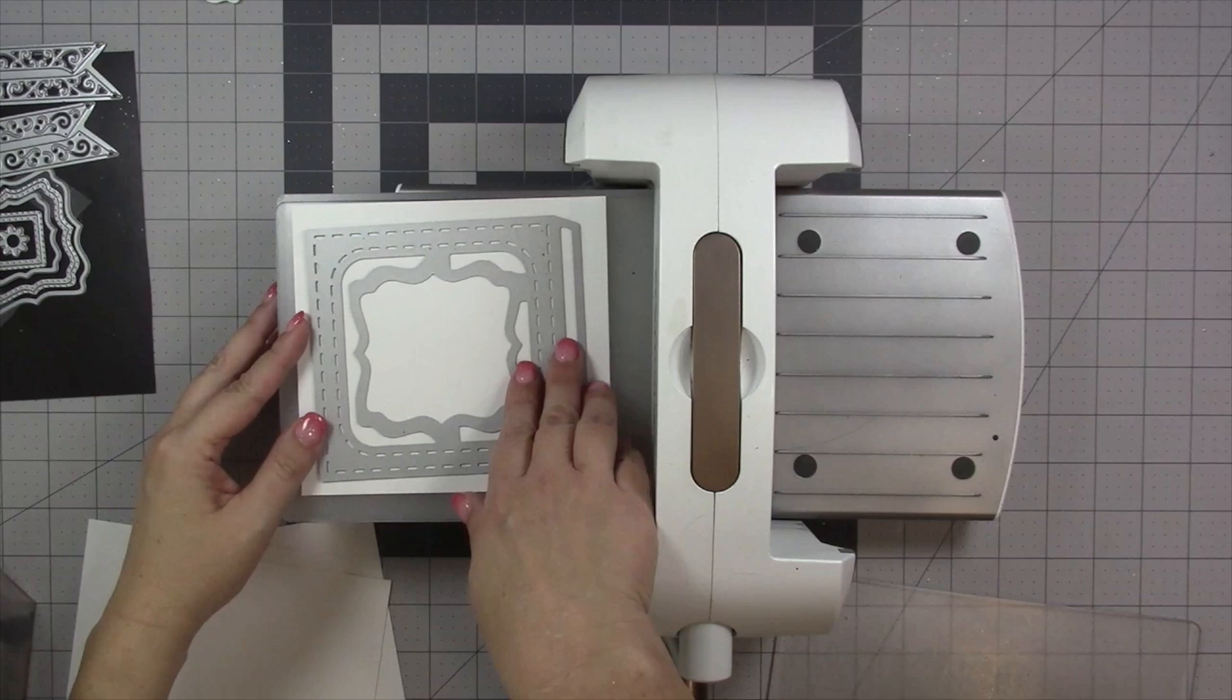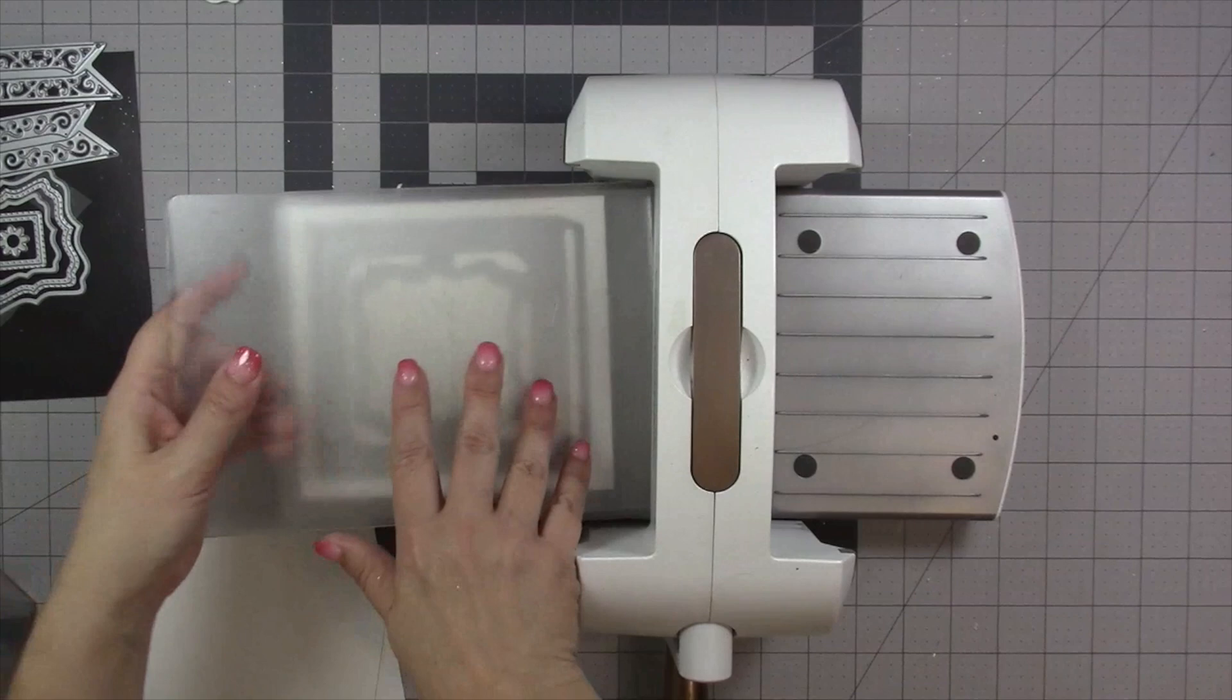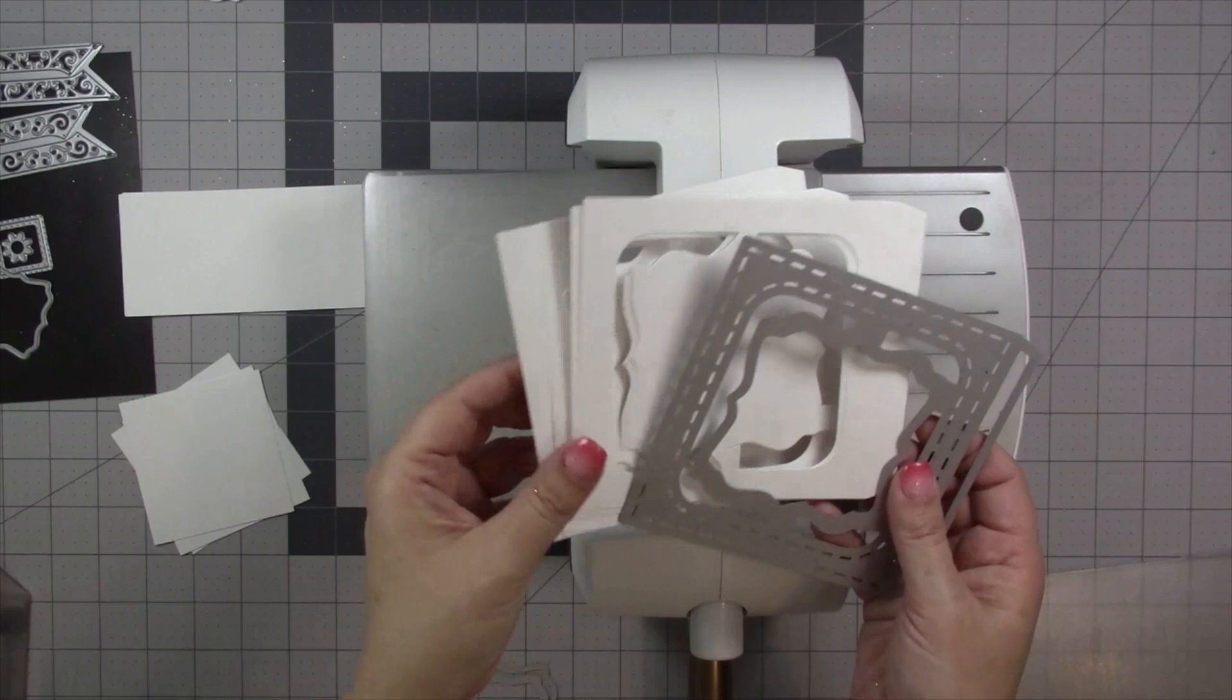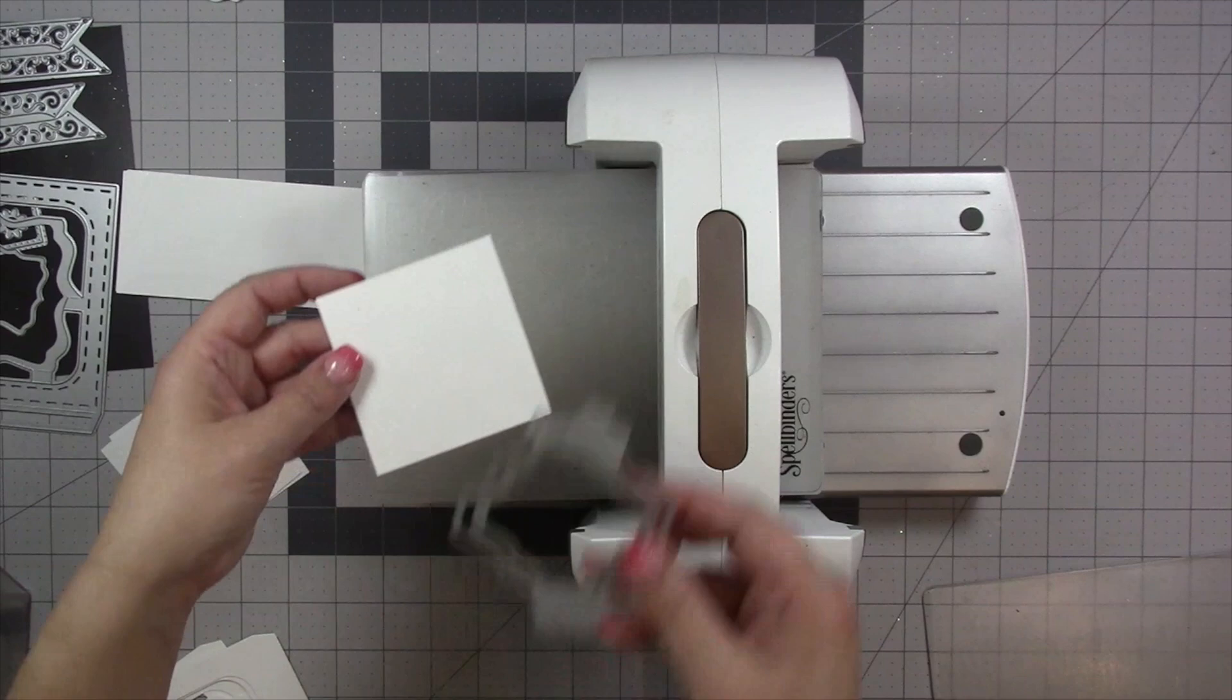The fancy label accordion cuts one page with a tab attached and you cut as many pages as you need. So I am going to cut four pages and I can use any die cutting machine that can accommodate a wafer thin die and today I am using my Spellbinders Platinum 6. I'm using a heavier white cardstock for all of my die cutting today.